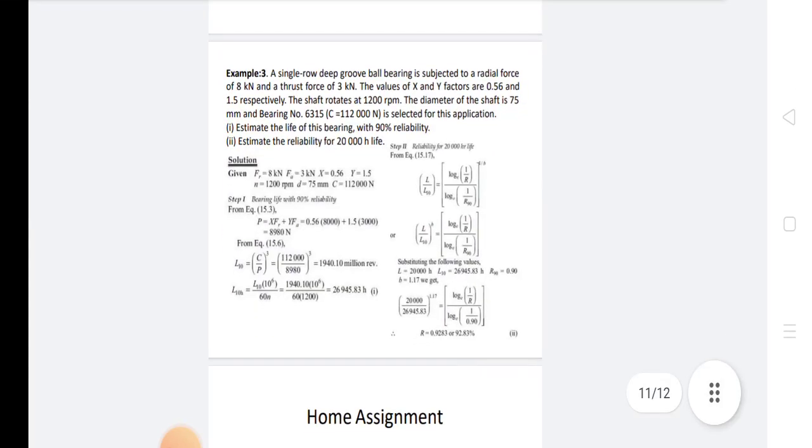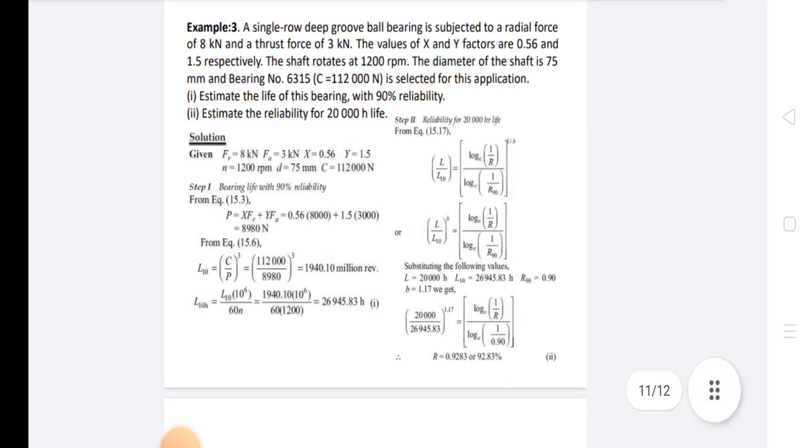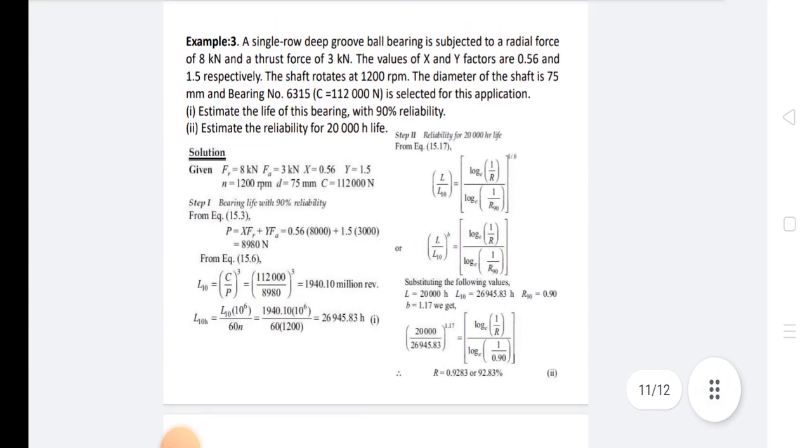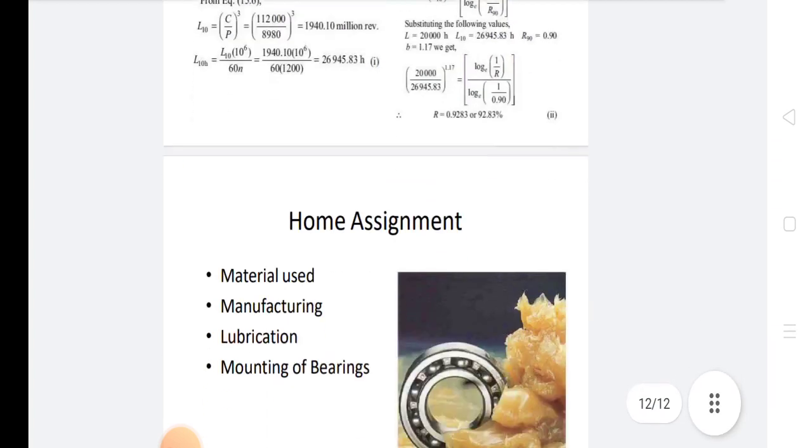This is the example. In this example, a single row deep groove ball bearing is subjected to a radial force of 8 kN and thrust force of 3 kN. This is a very simple problem, only values are put in and the solution is obtained.